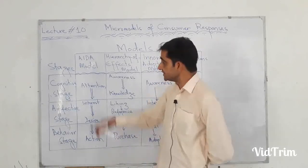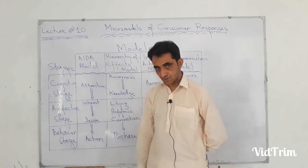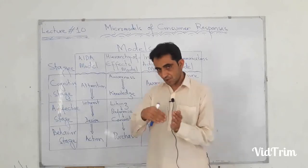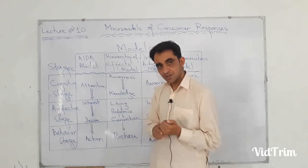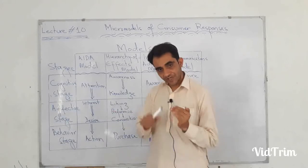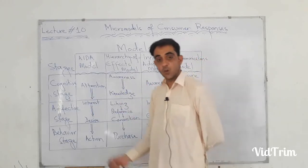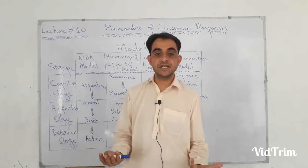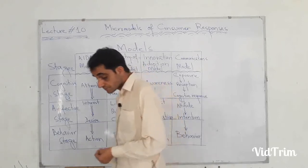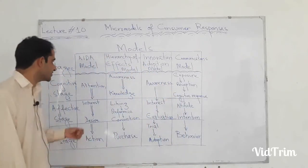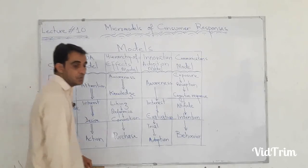So this model is called the AIDA model. We grab their attention toward our product, then by explaining the product features, price, and the four Ps, we create interest. When interest reaches its maximum level, desire is created, the customer arranges money, and finally purchases the product. AIDA is an abbreviation of attention, interest, desire, and action — a simple model we have explained before.